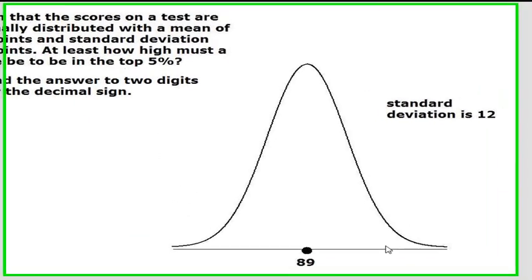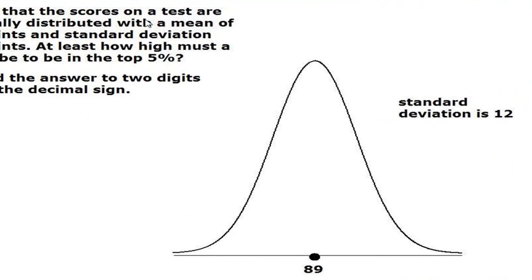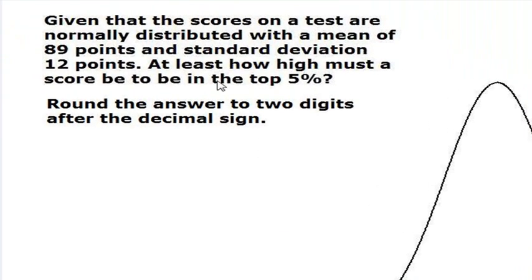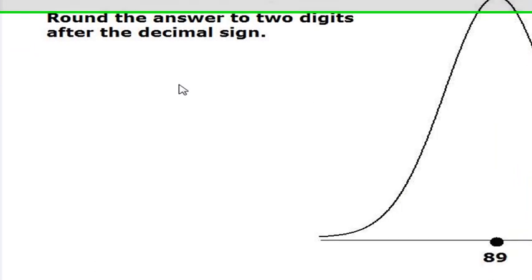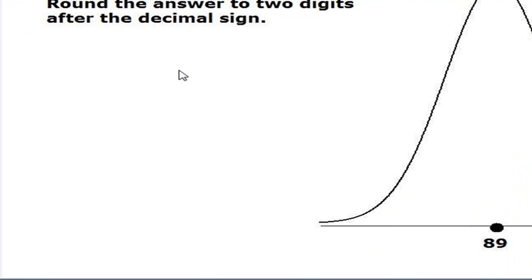We are given this normal distribution that shows the scores on a test with a mean of 89 points and a standard deviation of 12 points. We have to find at least how high a score must be in order to be in the top 5%.